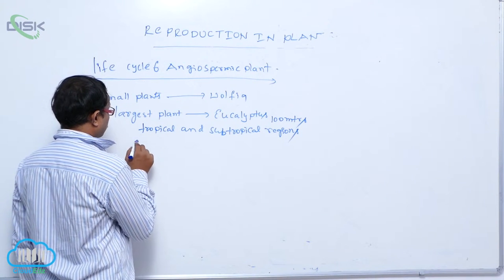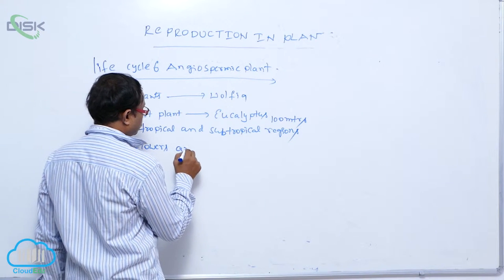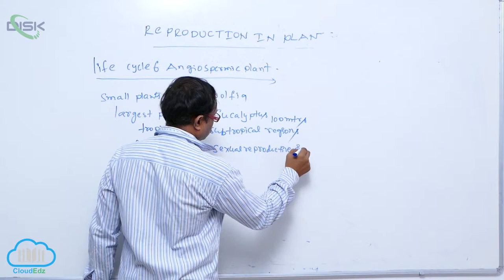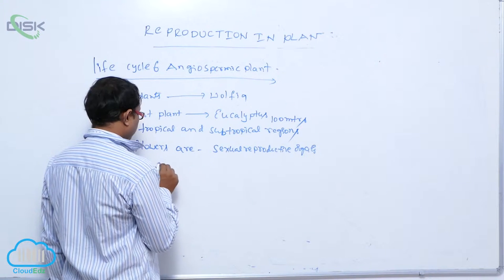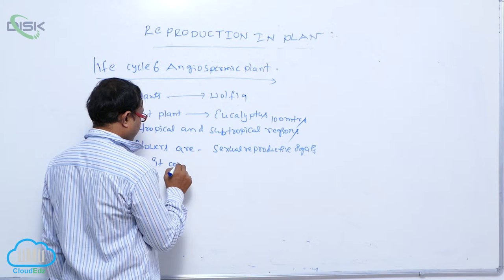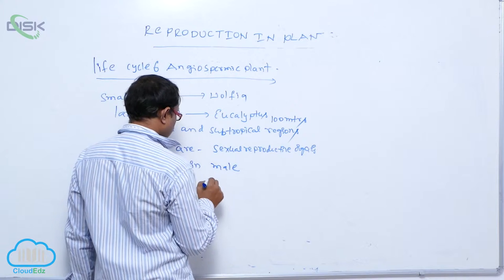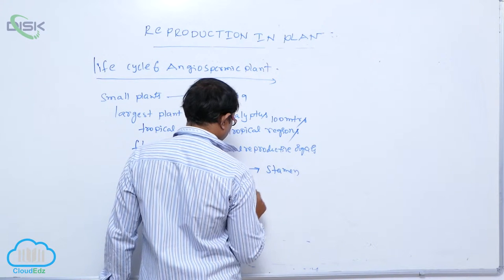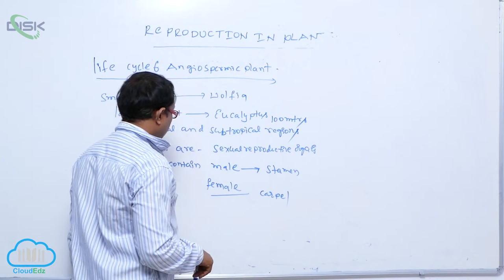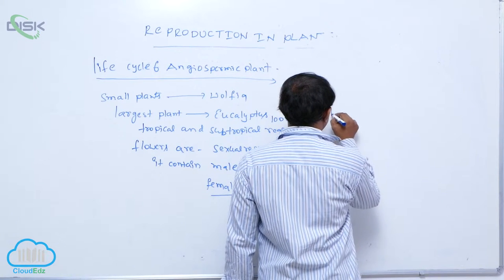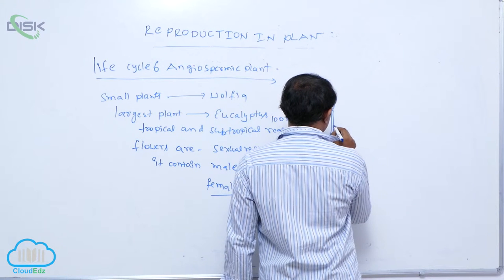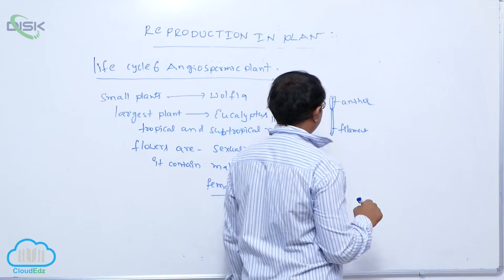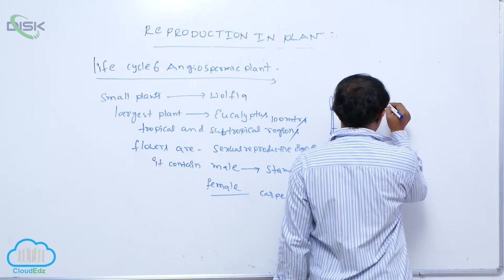The sexual reproductive organs of angiosperms are known as flowers. In the flower, the male reproductive organ is known as the stamen and the female reproductive organ is known as the carpel. The stamen has two main parts: the filament and, above it, the anther. The anther produces pollen grains.